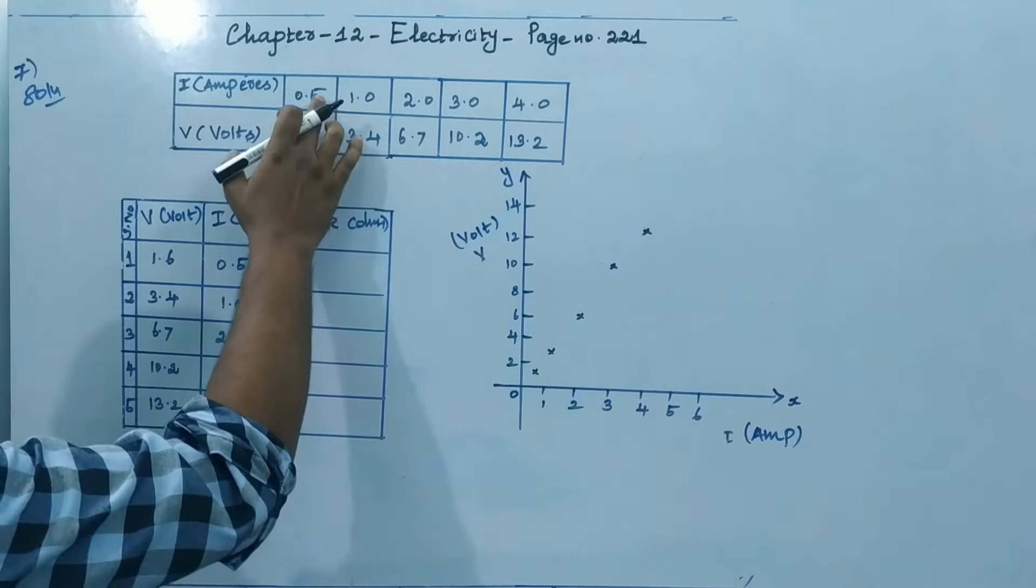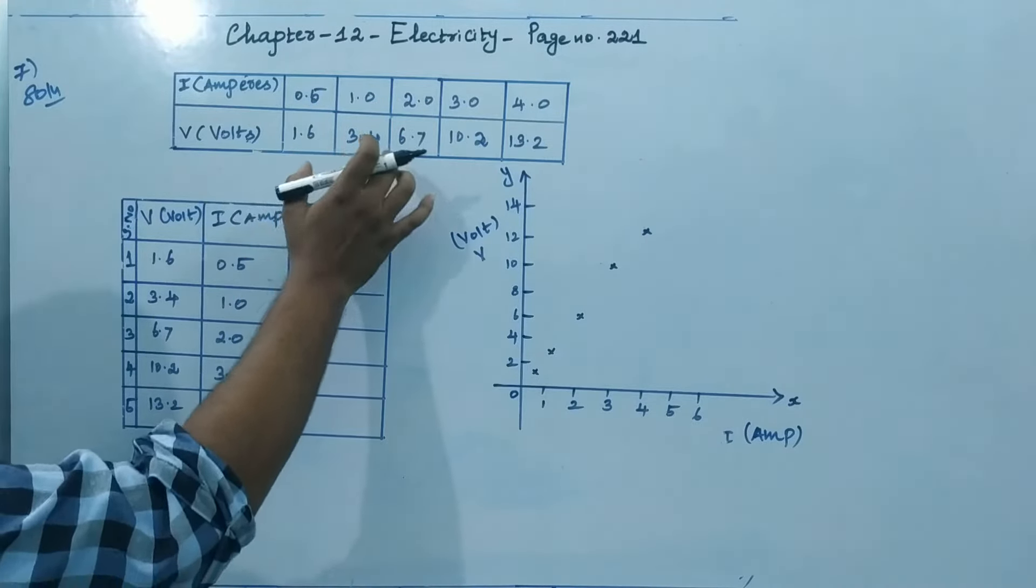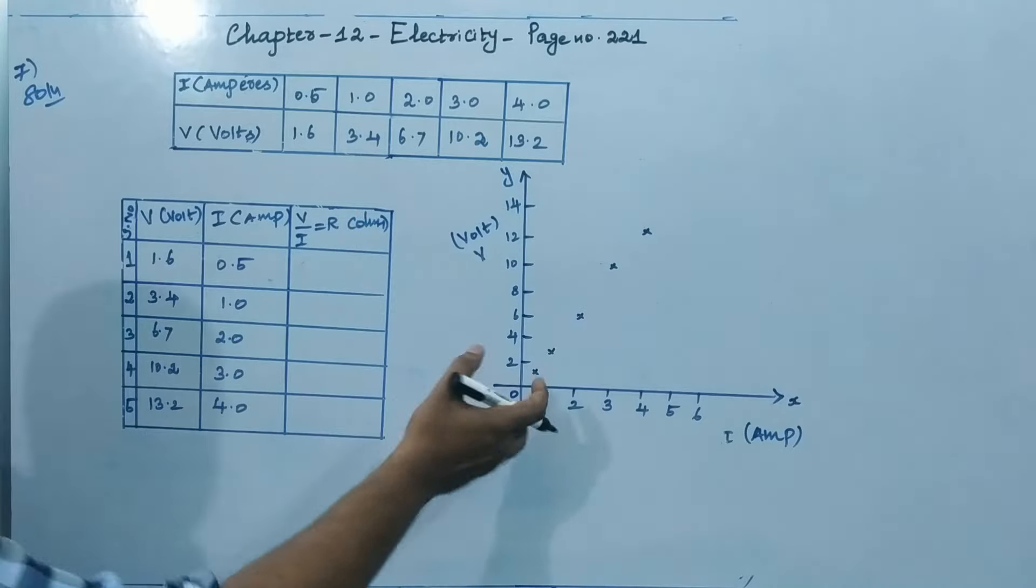The given values: 0.5, 1, 2, 3 and 4 ampere for current. 1.6, 3.4, 6.7, 10.2 and 13.2 volts for voltage. So I have noted here graph.